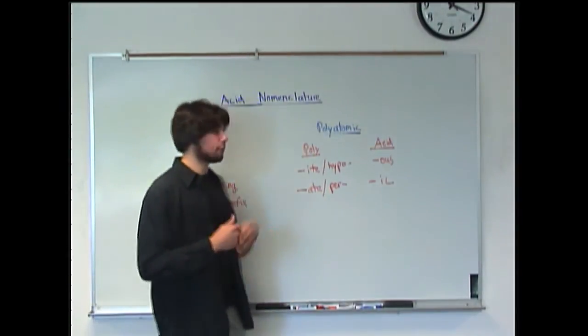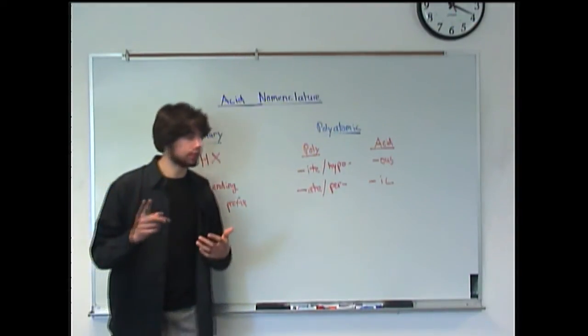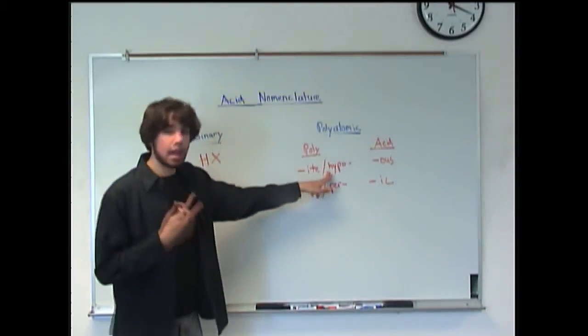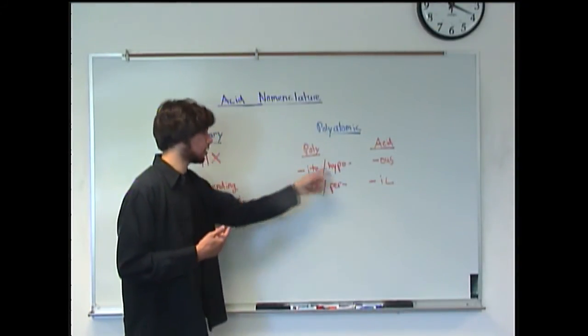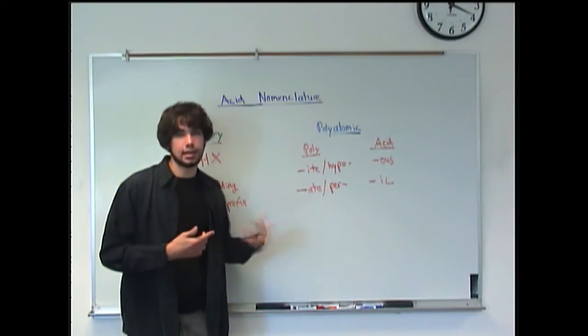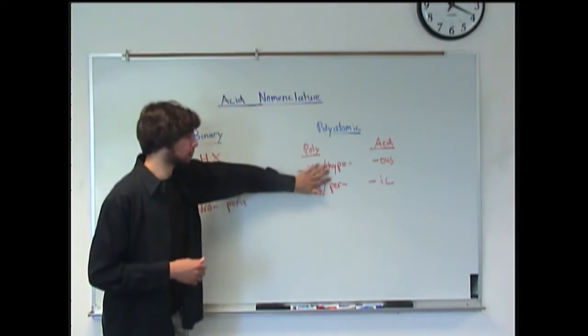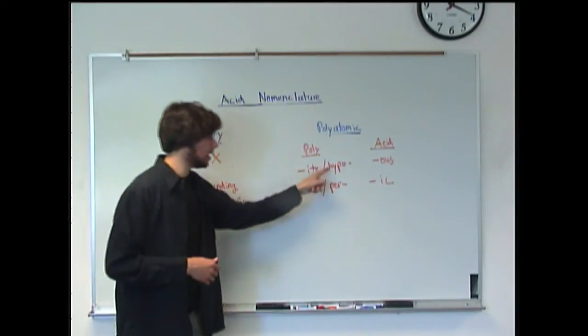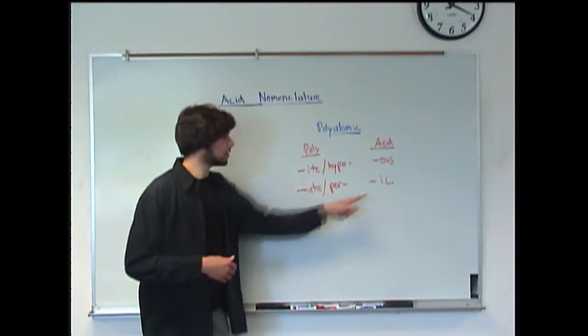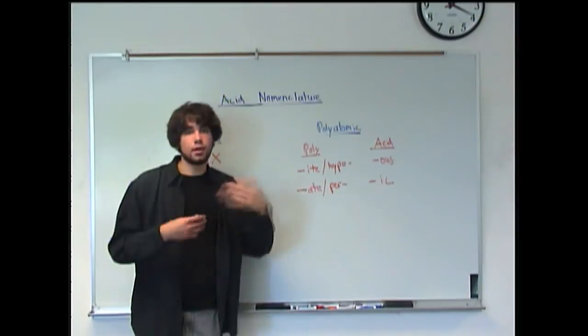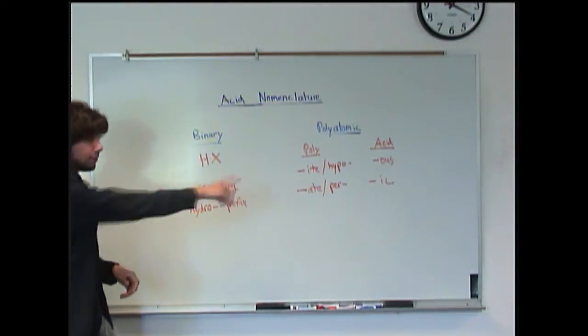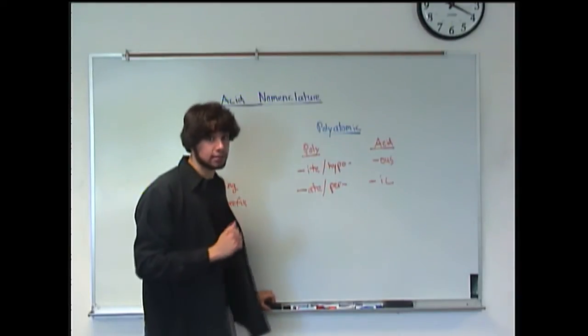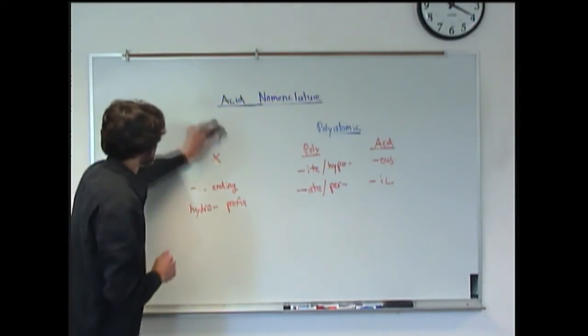Now there's one particular kind of polyatomic ion where you have the hypo prefix and the per prefix. And basically those correspond with the ITE and ATE endings respectively. So really you don't really need to worry too much about these. But just know that if you see either one of these prefixes it's going to also correspond to these two suffixes when you put them at the end to name it. Alright so make sure you write all these down since they're your basic rules for naming acids. And let's do some examples.